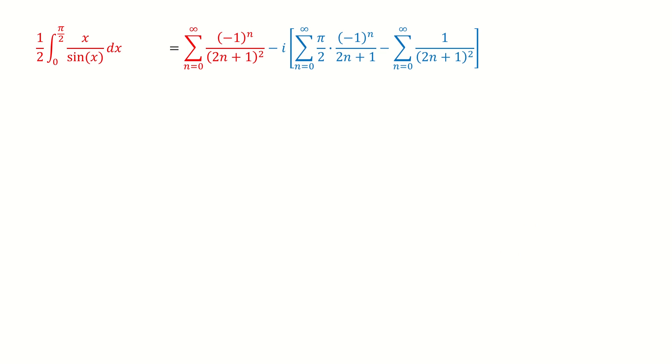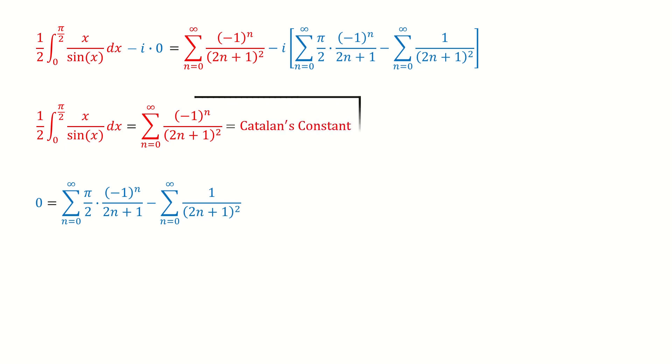For left hand side, this integral gives real numbers, so the imaginary part is zero. We put this trivial term here. Then we let the real part equal to the real part, and the imaginary part equals to the imaginary part. For this red series, it equals to the Catalan's constant. So we are done for this red equation.